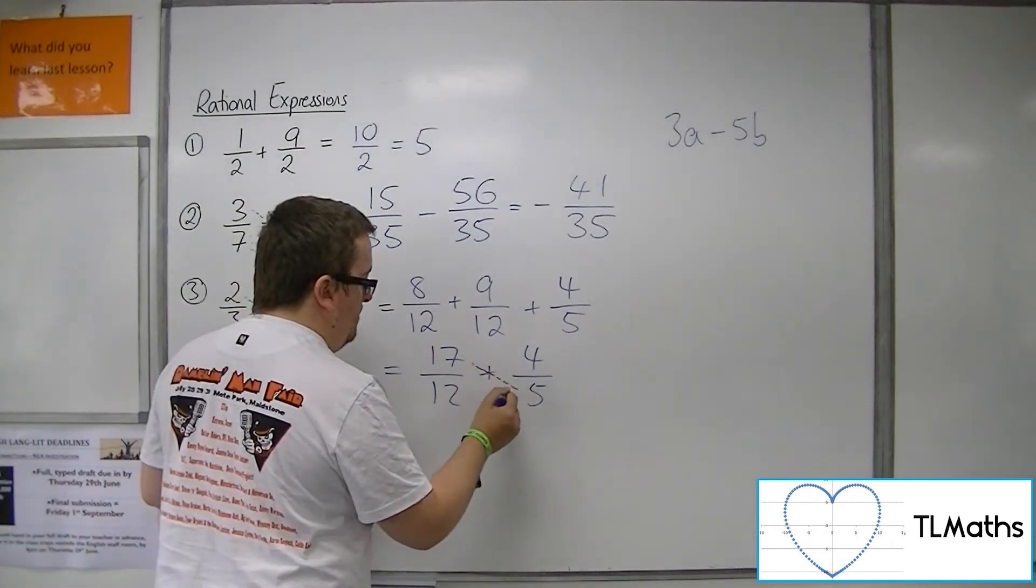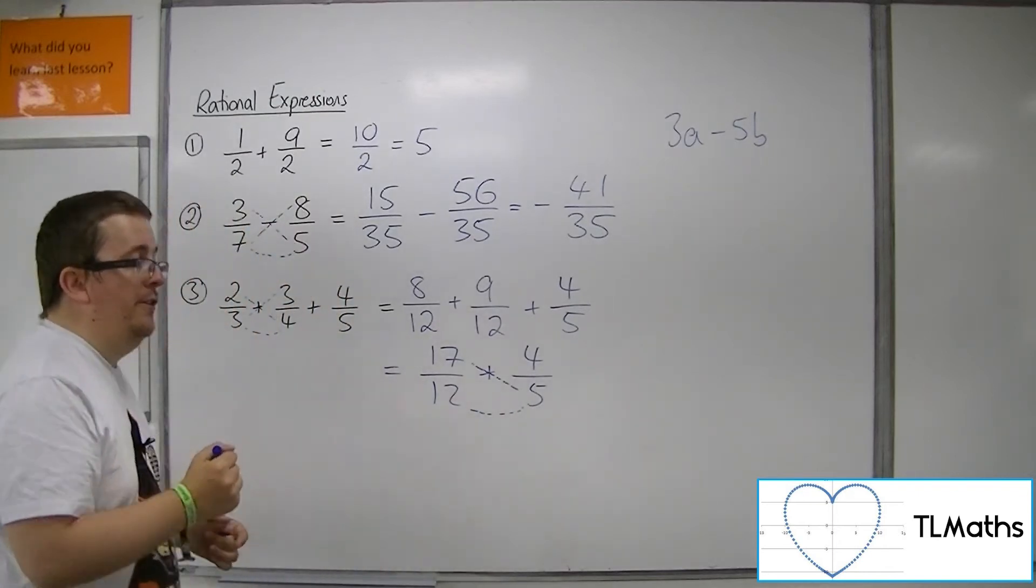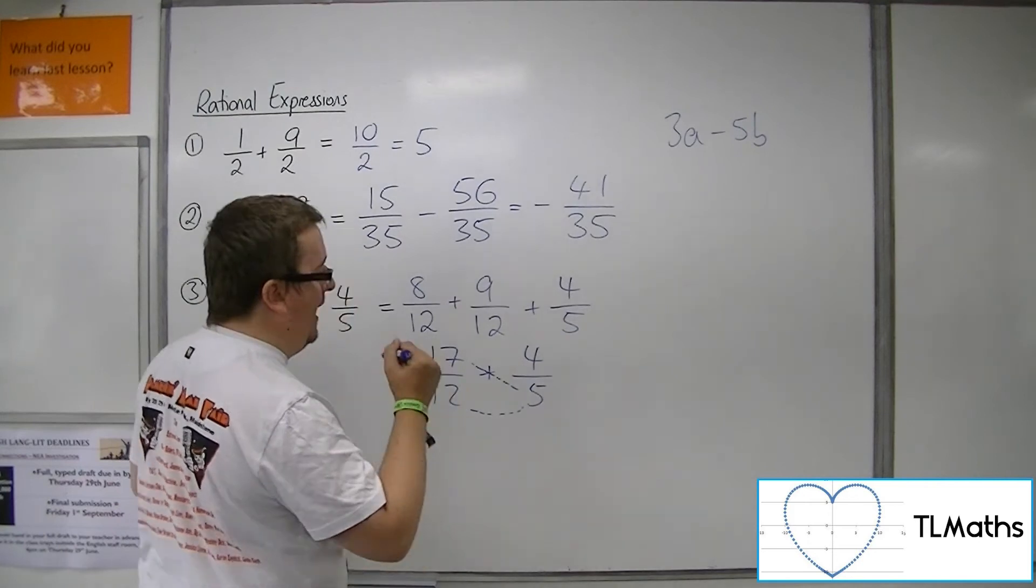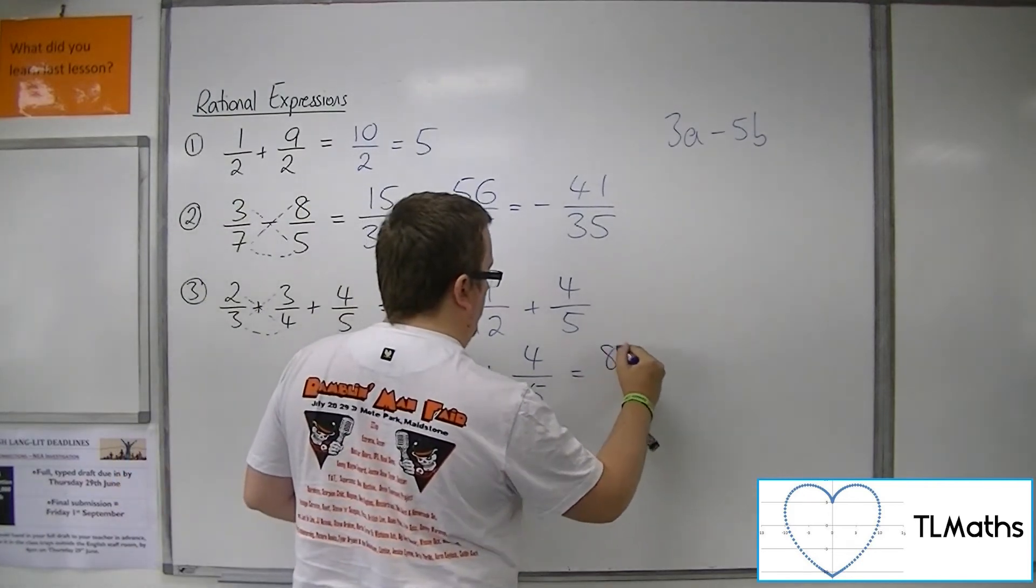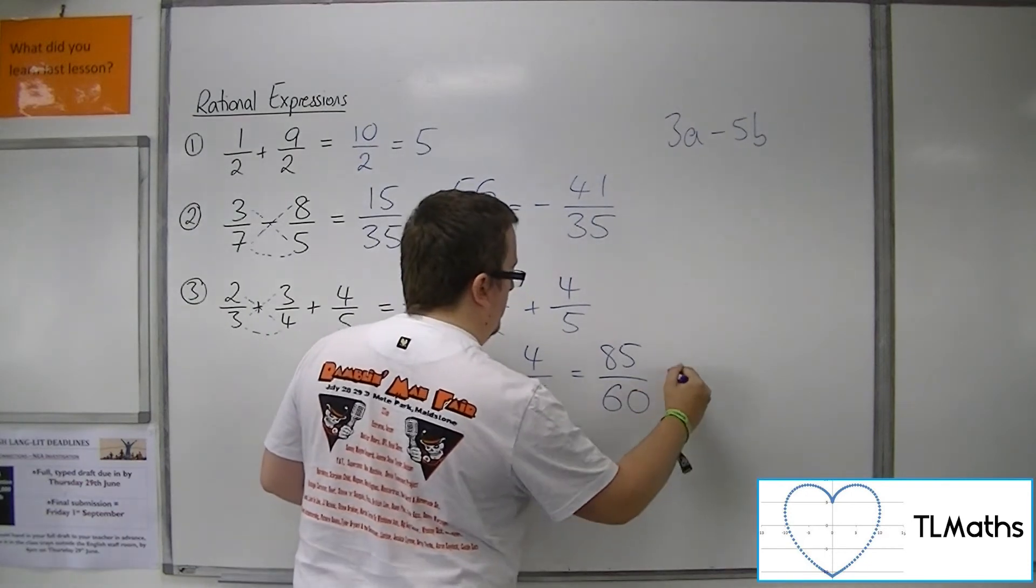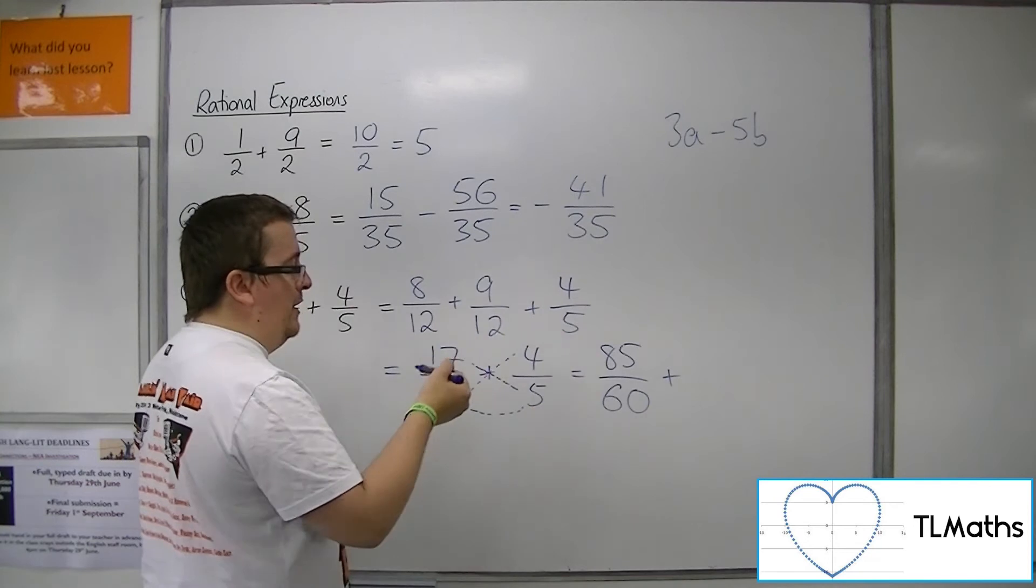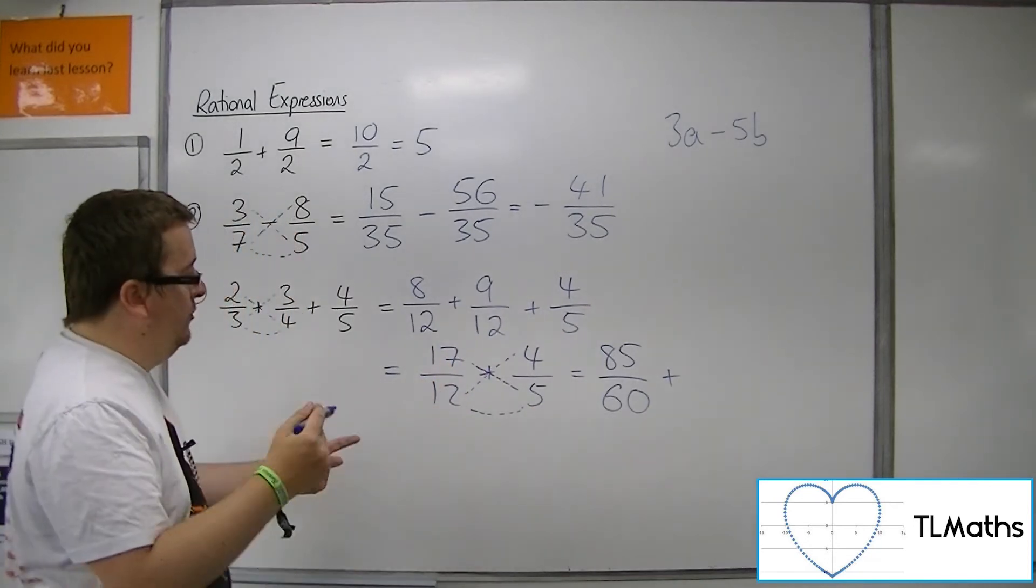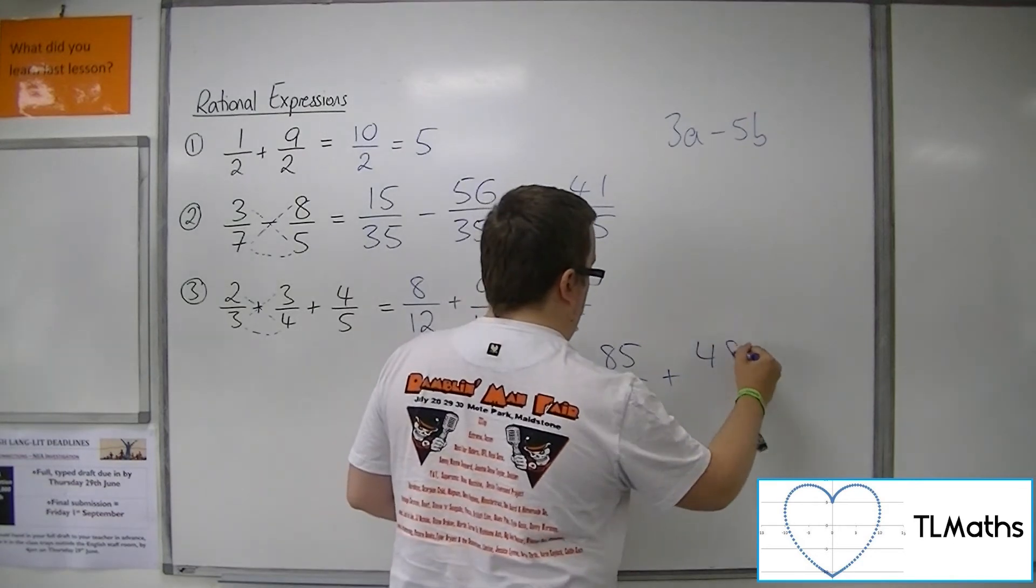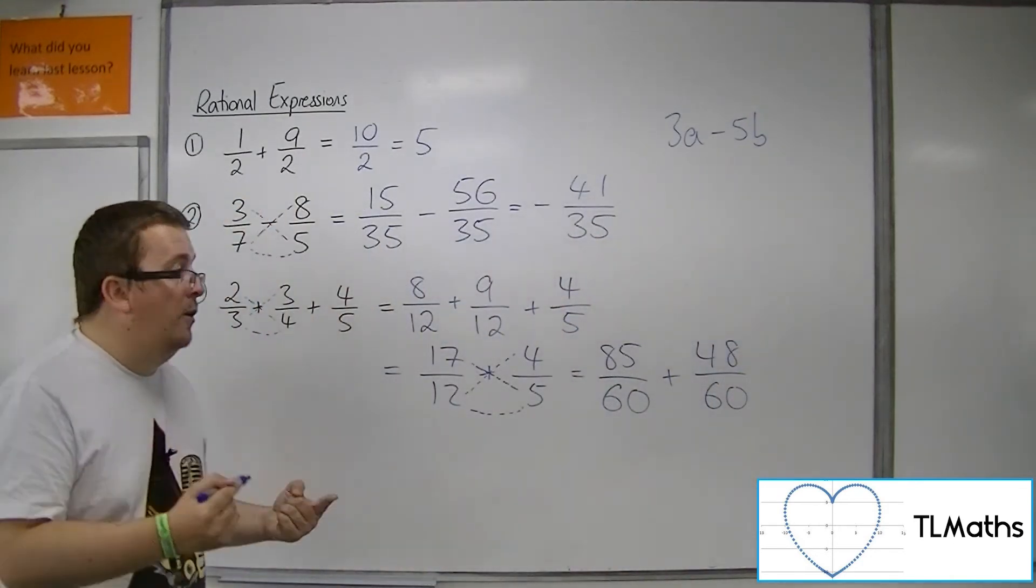So that leaves me with a problem of combining these two fractions. So I'm going to have to multiply top and bottom of the first fraction by the 5. Now 17 times 5 is 85. 12 times 5 is 60, and then if I multiply the second fraction, top and bottom, by 12, it doesn't change the size, but it gives me 48 over 60. So I now have a common denominator.